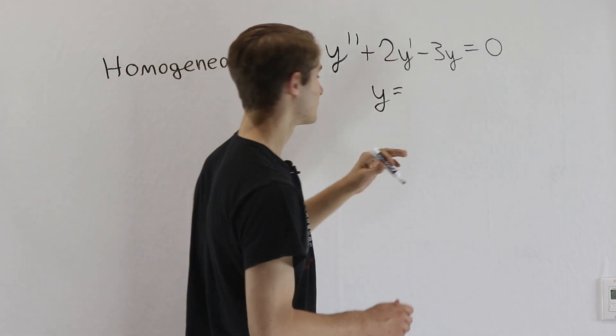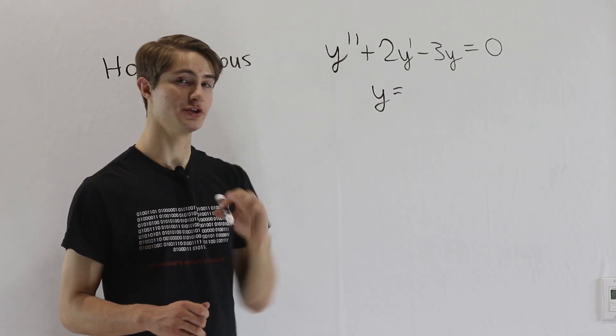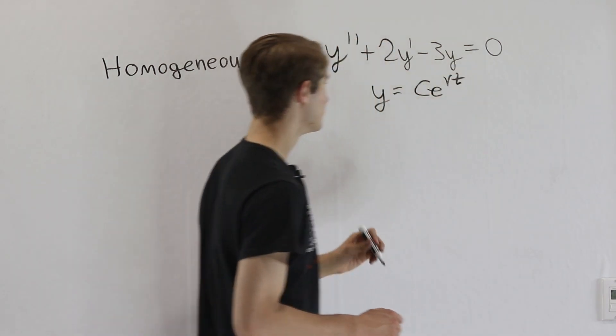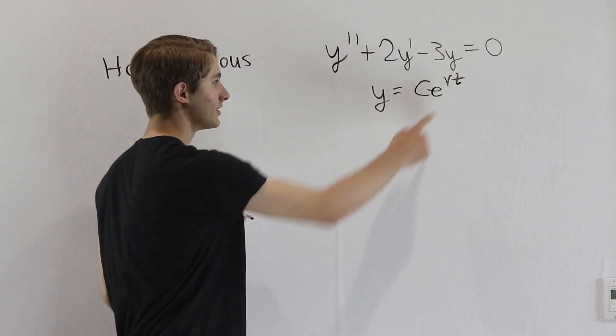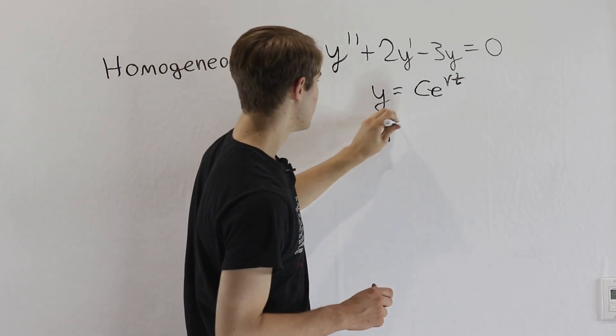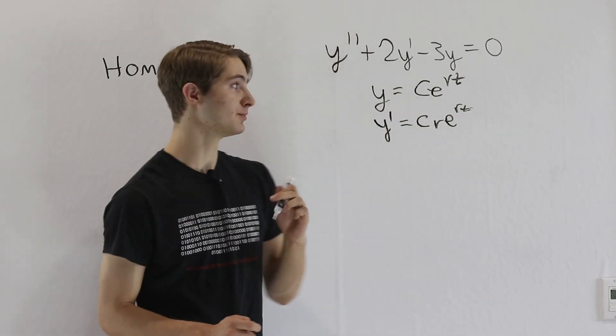Do we know some kind of function where its derivative is a constant multiple of the original function? Well, I think we do, and that function is c e to the rt. If we have e to the rt for any number r, and then we differentiate it, we get y prime equals r e to the rt like this. So r is that constant multiple.